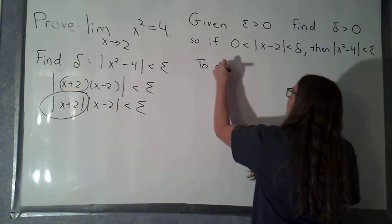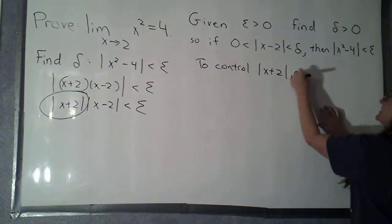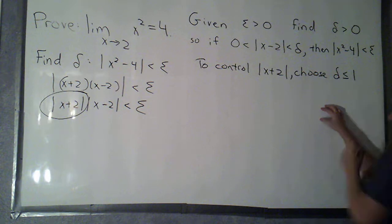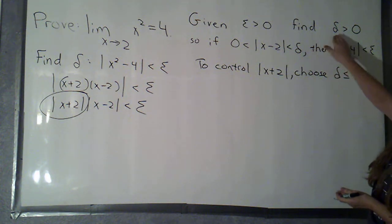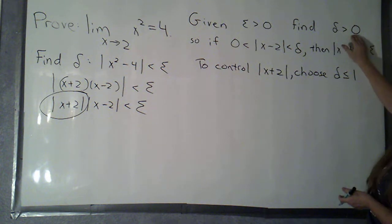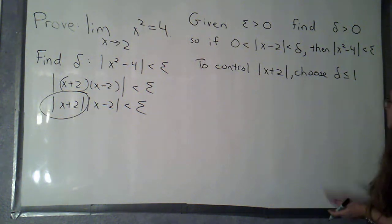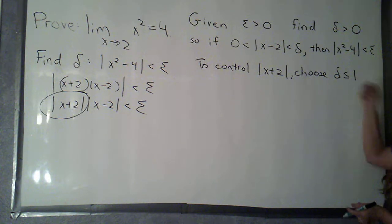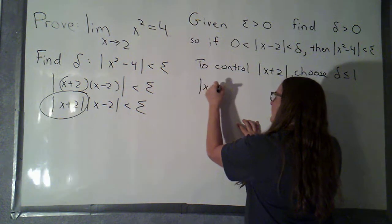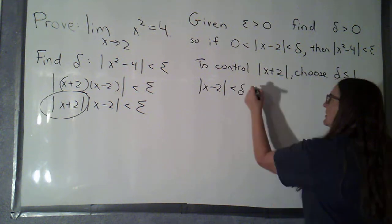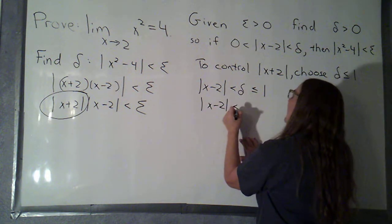To control the absolute value of x plus 2, I'm going to make an executive decision that my delta value is going to be less than or equal to 1. I was just told to find the delta — I wasn't told where to look, other than that I had to look in the region of positive numbers. I'm making a choice that I'm only going to look at numbers that are less than or equal to 1. But then, since I'm ultimately going to be controlling that the absolute value of x minus 2 will be less than delta, and since that's less than or equal to 1, I will have that the absolute value of x minus 2 is less than 1.